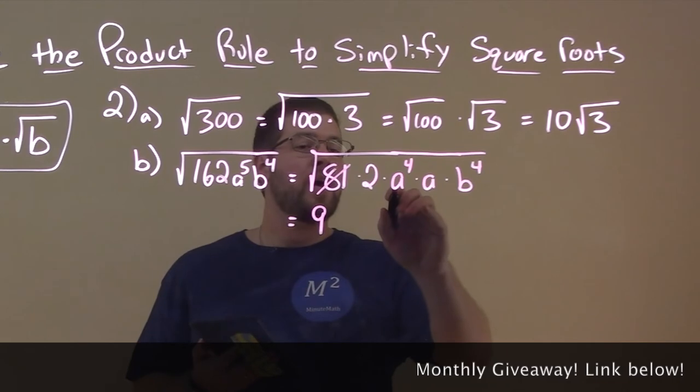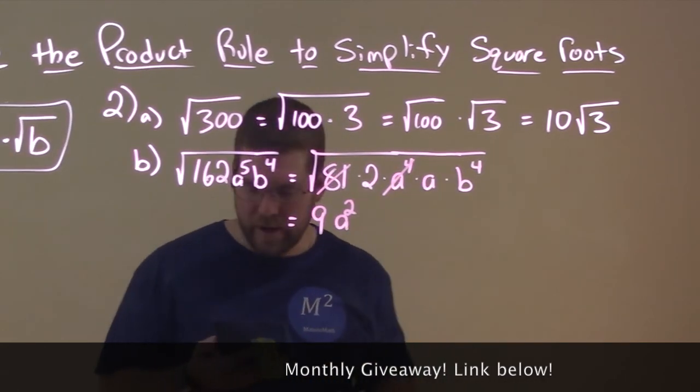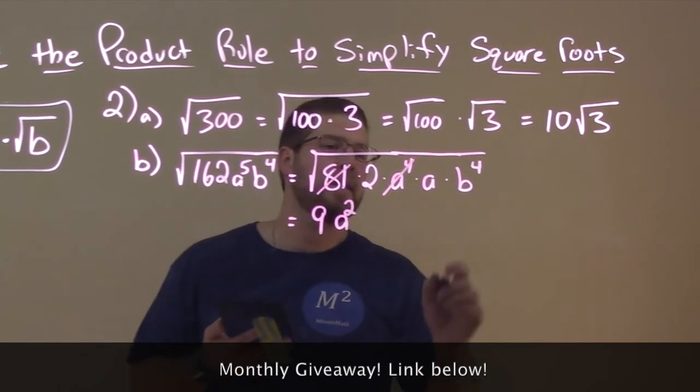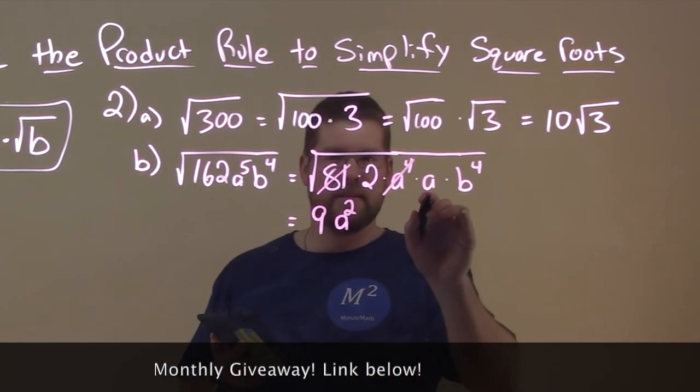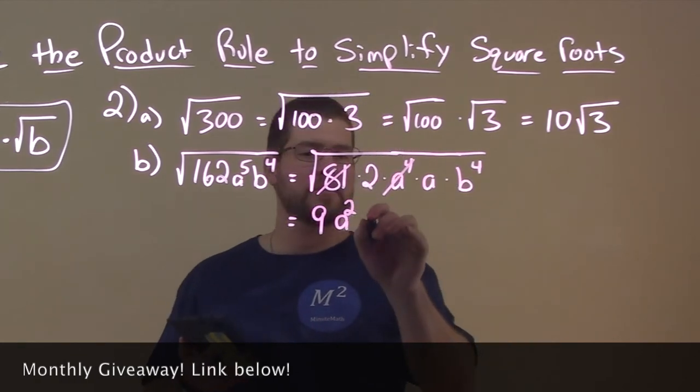Now, square root of A to the 4th power is just A squared, okay? And this A, we can't take the square root, but the B we can. So we have B to the 4th power is just B squared.